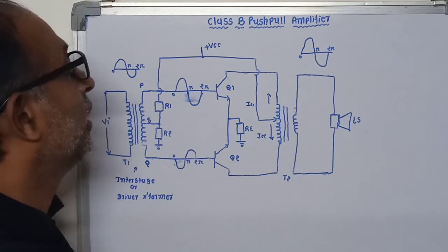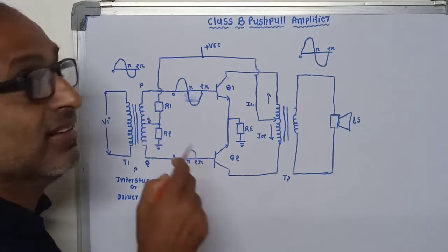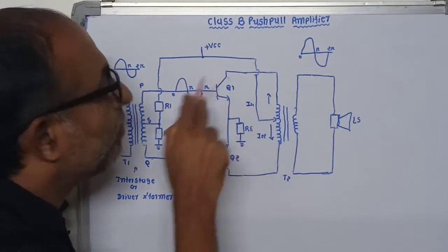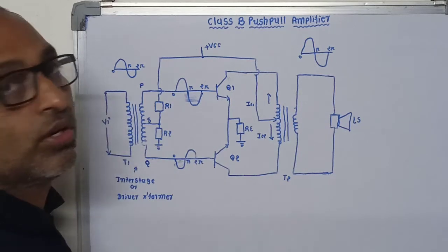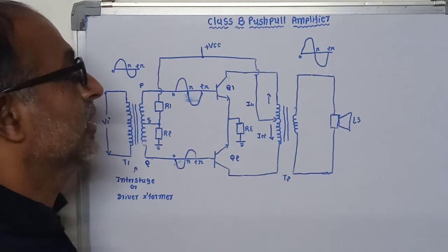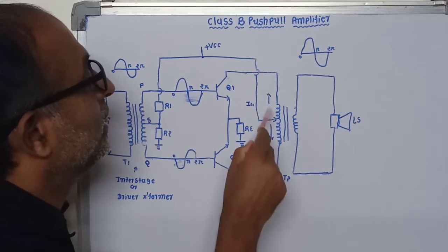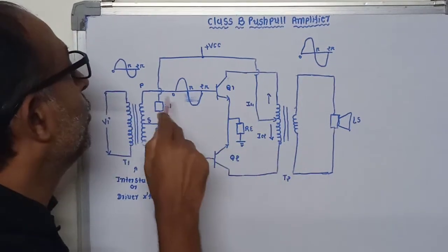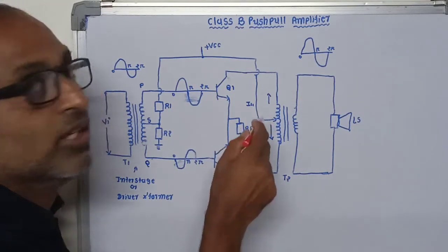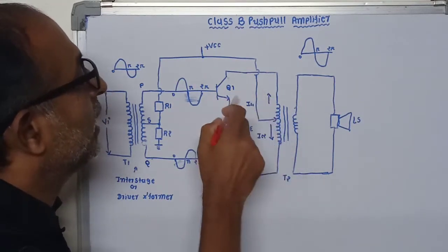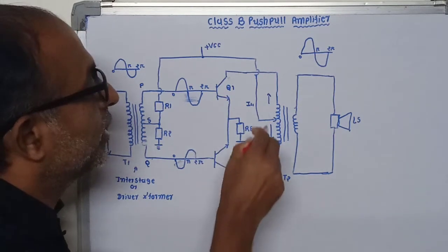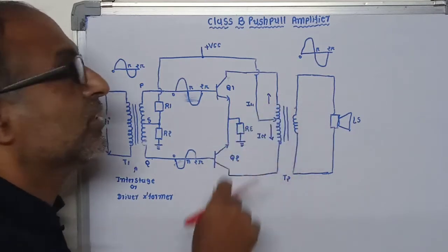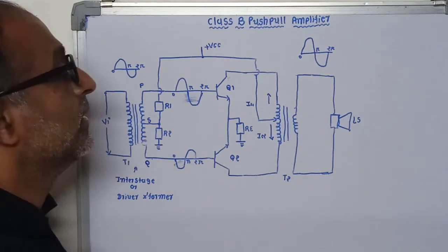This is the basic working of this amplifier. At the same time, power transistor Q1 is operated in the cutoff region. The direction of current in the primary windings for Q1 and Q2 are in opposite directions.